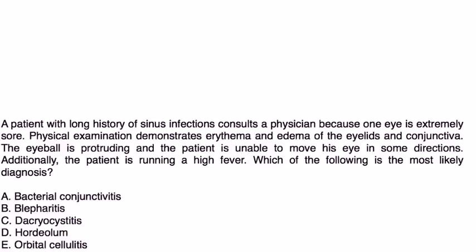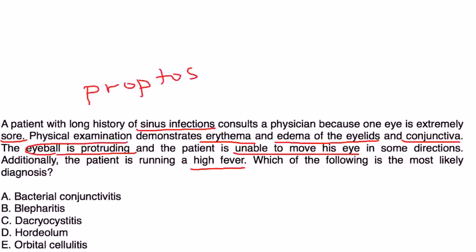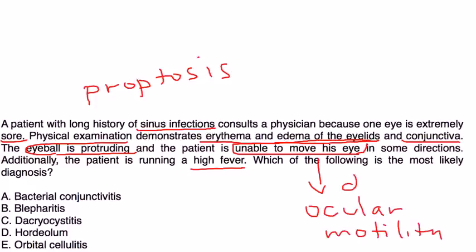Clinical vignette: A patient with a long history of sinus infections consults a physician because one eye is extremely sore. Physical exam demonstrates erythema and edema of the eyelids and conjunctiva. The eyeball is protruding and the patient is unable to move his eye in some directions. The patient is also running a high fever. The key findings are proptosis, decreased ocular motility, and fever — all pointing to orbital cellulitis.